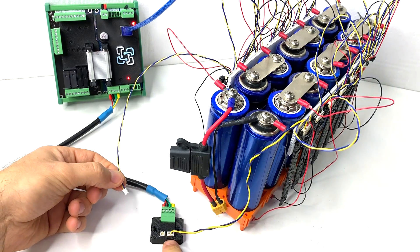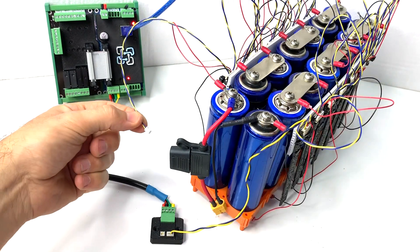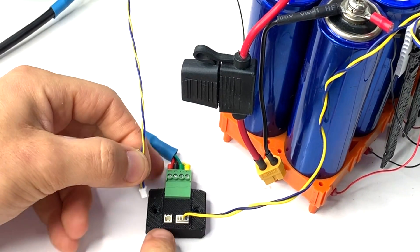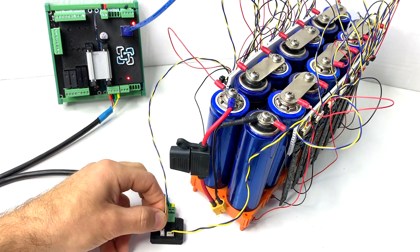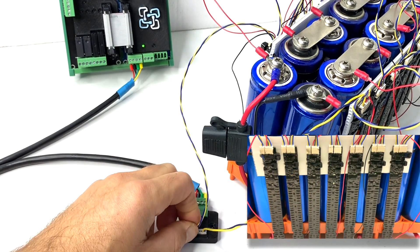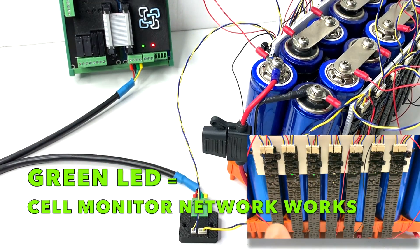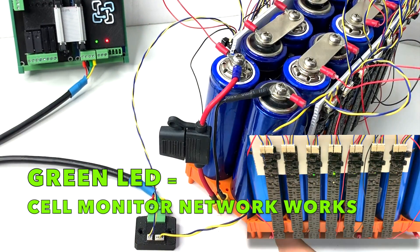So you see your daisy chain network starts from the four pin, works all the way around the pack and comes back here to this two pin that goes connected here and feeds back to your Watchmon supervisor. Green light should come up as soon as the connector is connected here. Three, two, one, yes. So that means that your daisy chain network is uninterrupted and passes through all cell monitors.